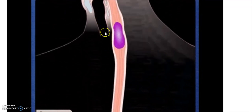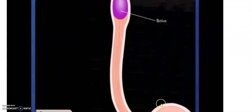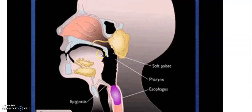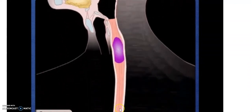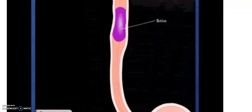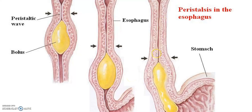After the buccal cavity, the food goes through the esophagus into the stomach. The esophagus has a muscular inner lining which undergoes contraction and relaxation, helping it to move food from the buccal cavity to the stomach. This movement is called peristalsis, and peristalsis is going on throughout your gut — right from your mouth to the anus, the whole alimentary canal undergoes peristaltic movement.